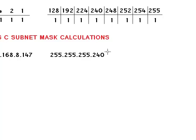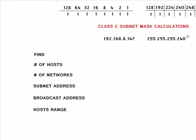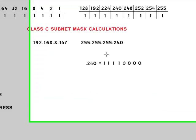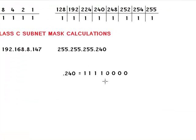First, let's convert your mask into binary. The number of networks is determined by the number of ones in your mask. In a class C address or class C mask, we only concern ourselves with the last octet. So we have four ones, that means 2 to the power of 4, which is 16. That means we have 16 networks using this mask.